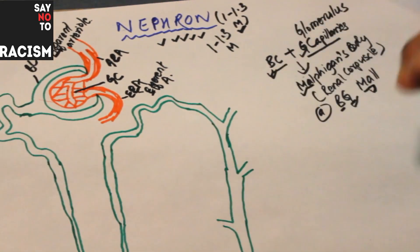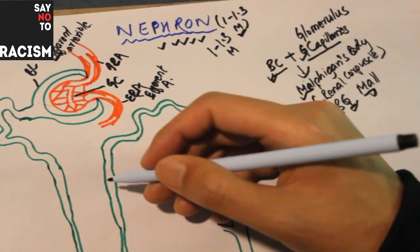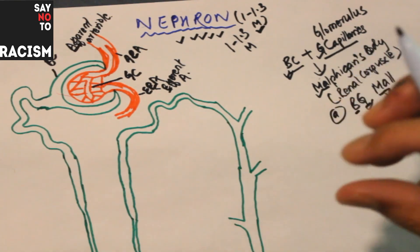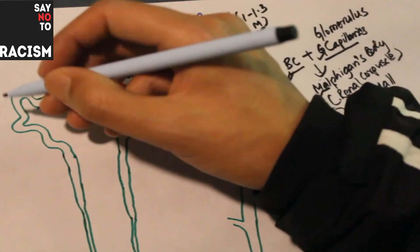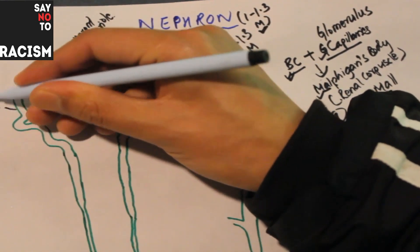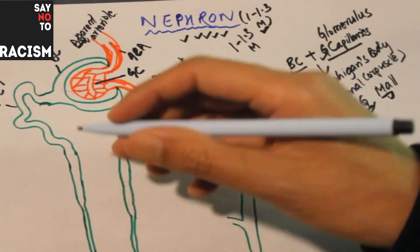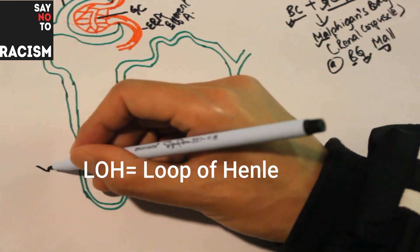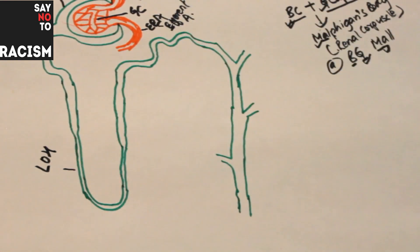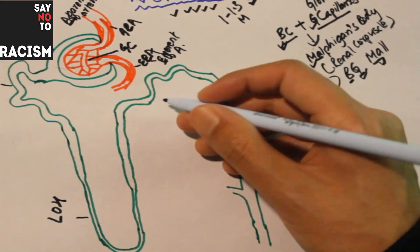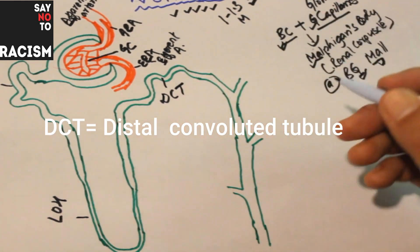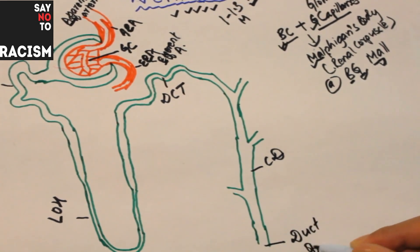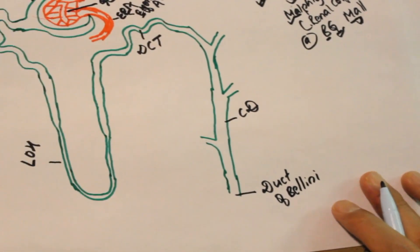The nephron consists of two main parts: one is the renal corpuscle or Malpighian body, and another is the renal tubules. The specific tubules are: the proximal convoluted tubule (PCT), the loop of Henle (loop-like structure), the distal convoluted tubule (DCT), the collecting duct, and the duct of Bellini - that last one is also important.